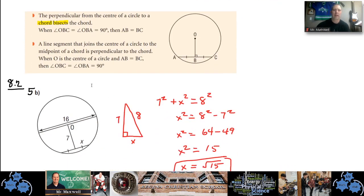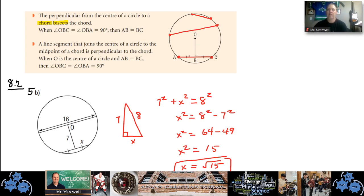The second point from 8.2: the perpendicular from the center of a circle to a chord bisects the chord. A chord is a line drawn from one point on the circle to another. If I draw a perpendicular line from a chord to the center — that's 90 degrees — it cuts that chord exactly in the middle, meaning AB equals BC. It doesn't matter where the chord is placed.